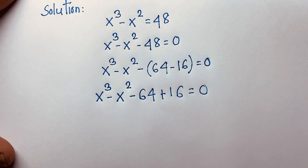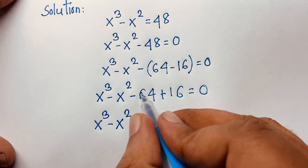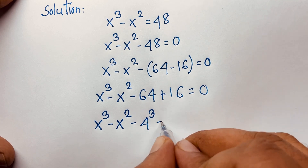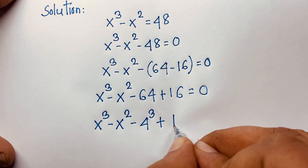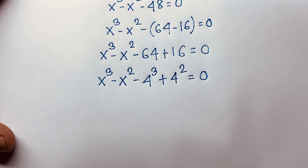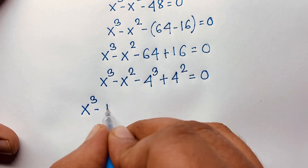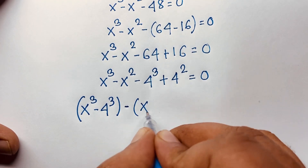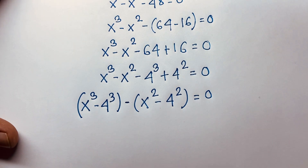Now, at this moment you can see this expression: x to the power 3 minus x to the power 2 minus 64, and minus minus becomes plus 16, is equal to 0. Here, 64 is 4 to the power 3 — 4 times 4 times 4 equals 64 — and 16 is 4 to the power 2. I can rewrite this grouping x to the power 3 minus 4 to the power 3, and taking the negative sign as common, giving minus open bracket x to the power 2 minus 4 to the power 2 close bracket, equals 0.